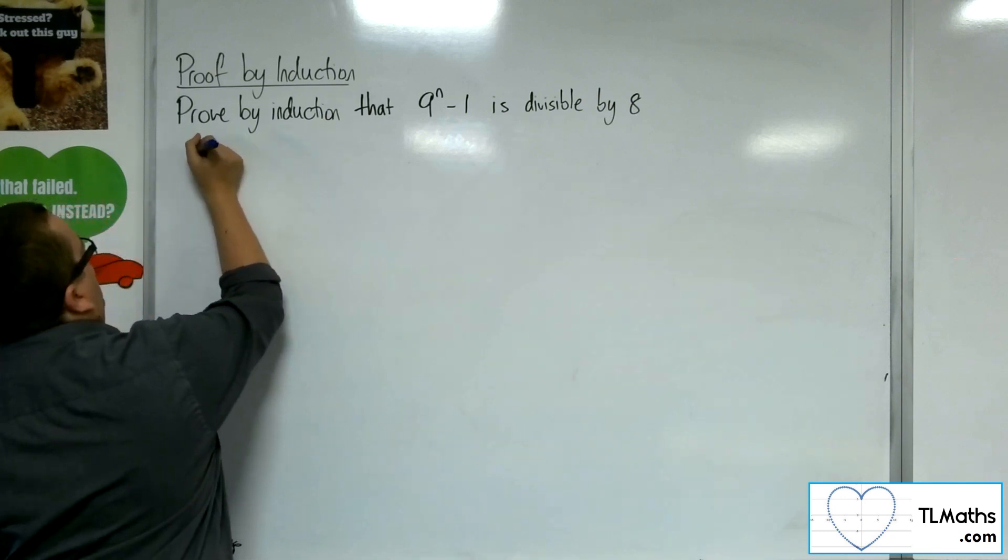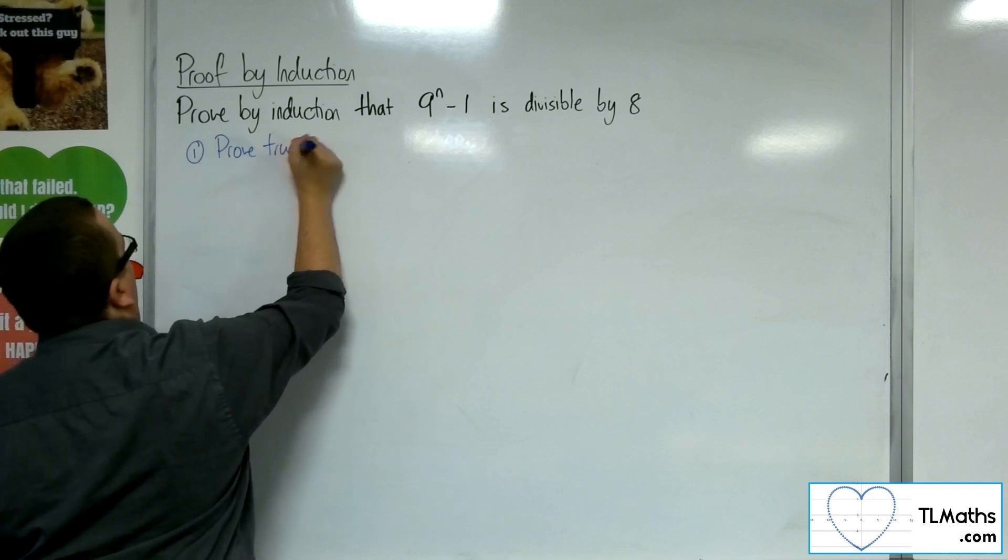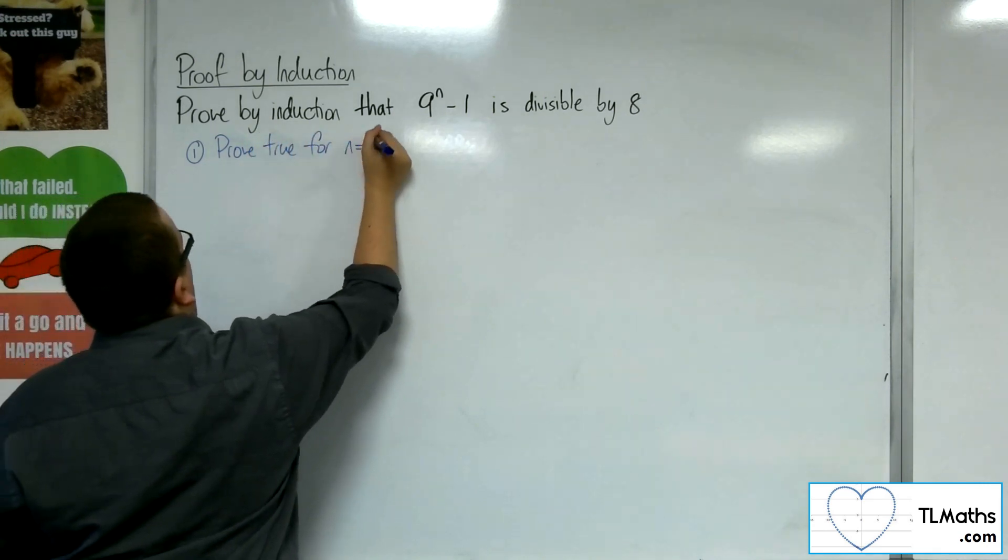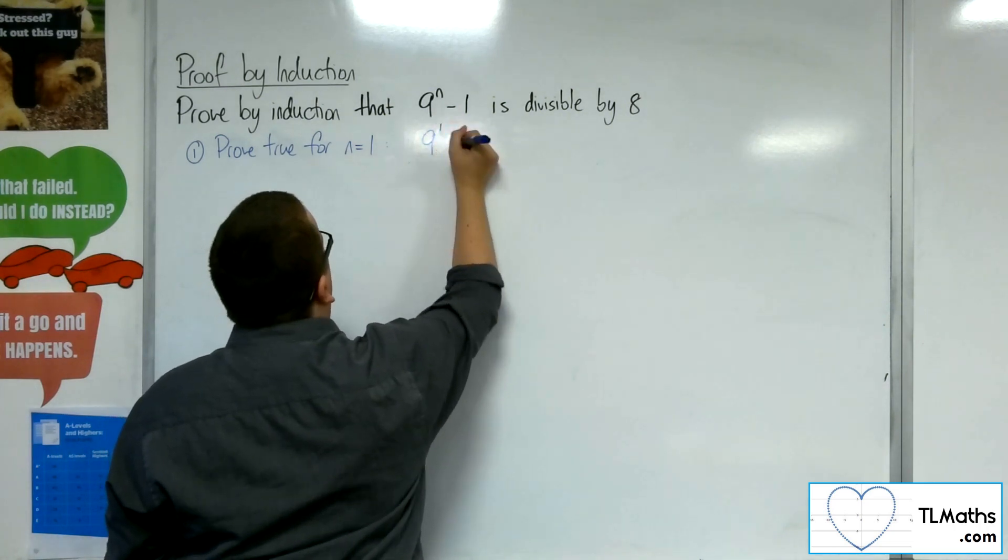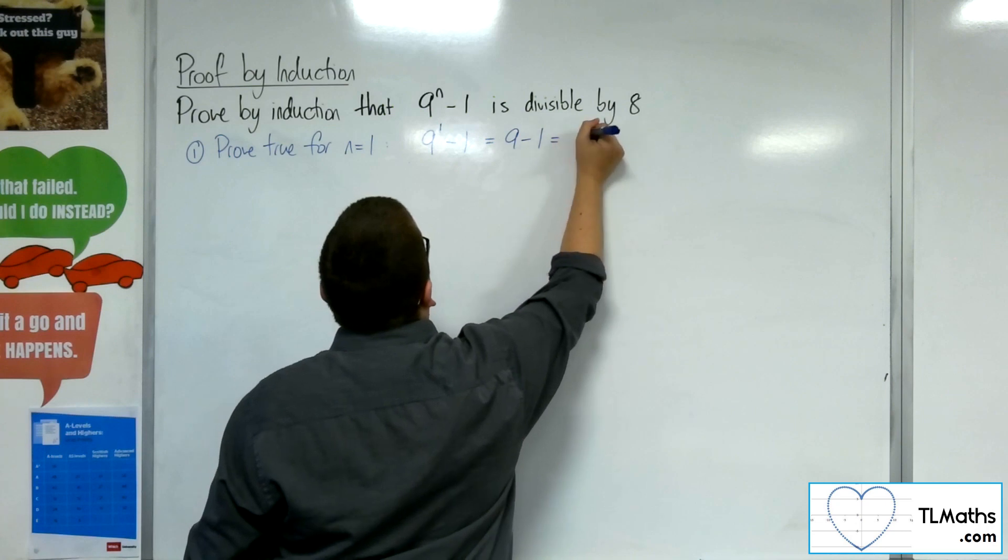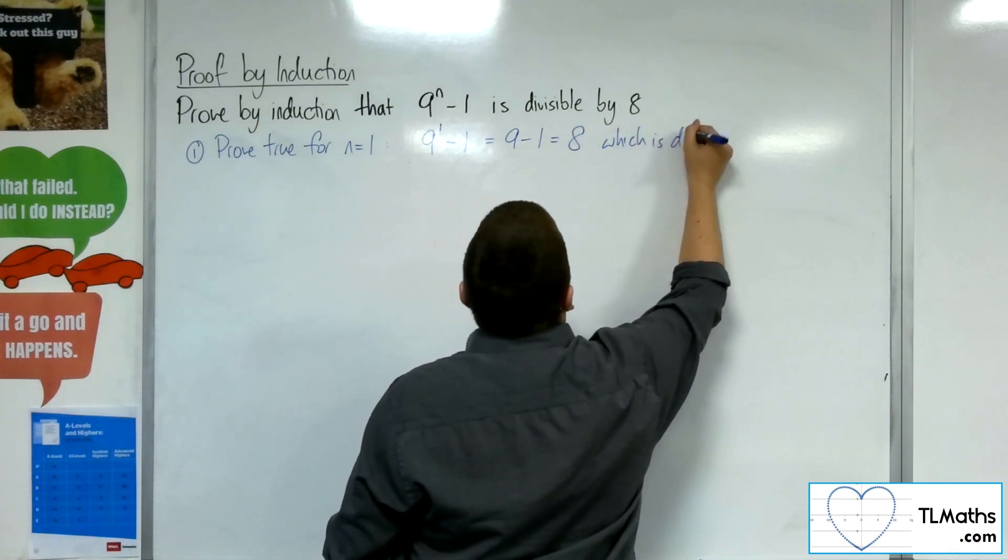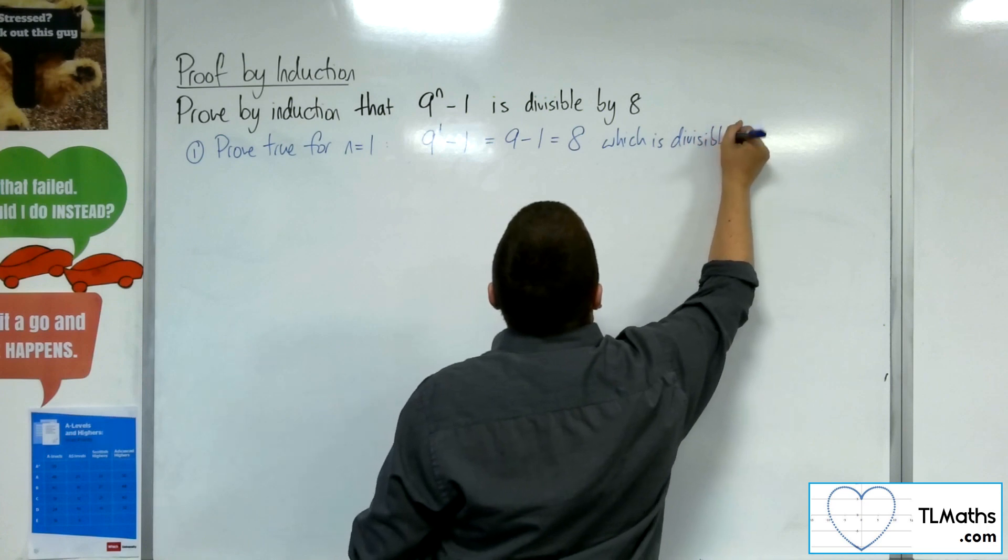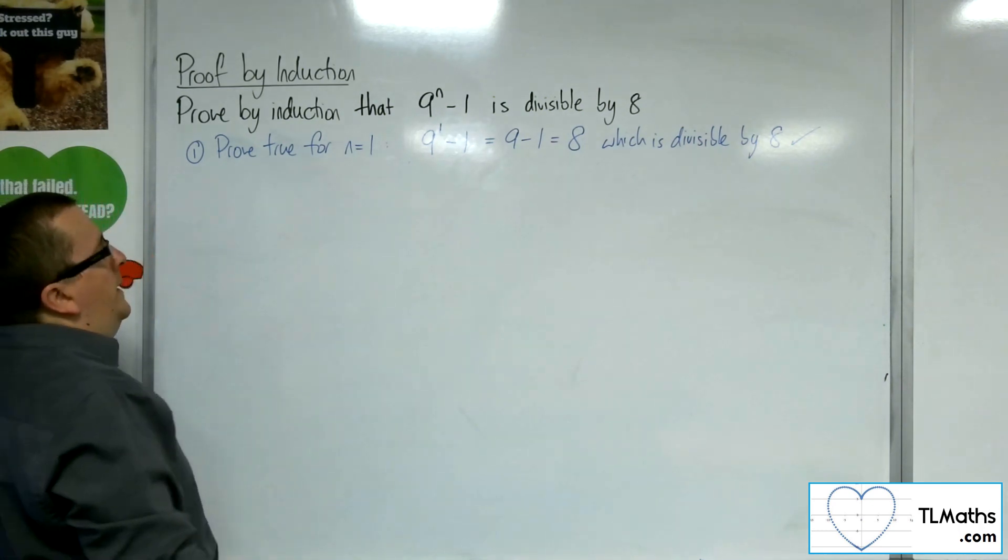So first of all, prove true for n equals 1. So we've got 9 to the 1, take away 1, which is just 9 take away 1, which is 8, which is divisible by 8. So that's fine.